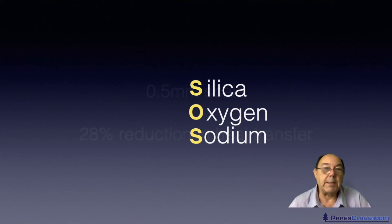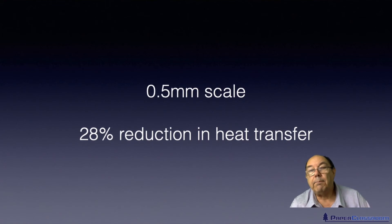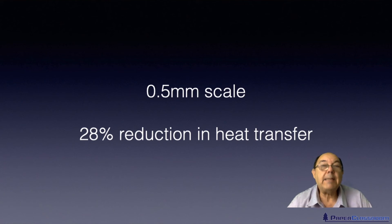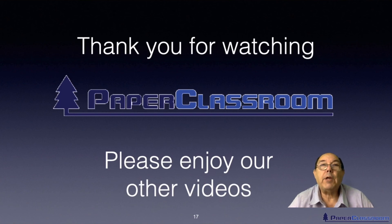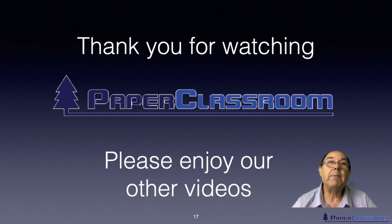To give you a sense of how serious the silica issue is: just half a millimetre of scale on the inside of your boiler caused by silica deposits will reduce heat transfer by 28% — a huge reduction. That comes to the end of this video. Thank you for watching. I hope you enjoyed it and found it informative. I look forward to doing more water and chemical additives videos soon.